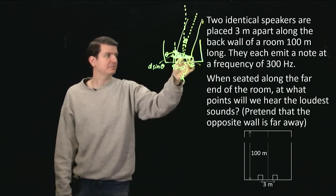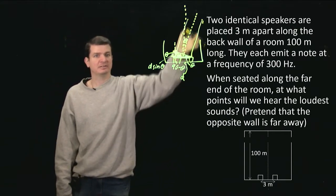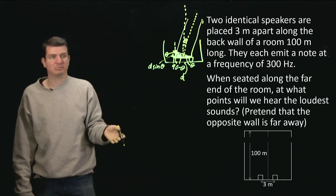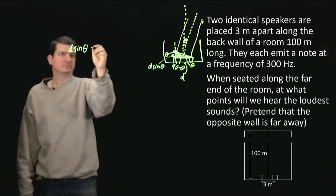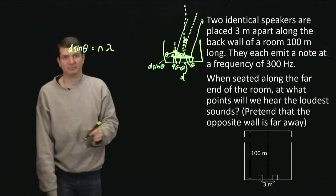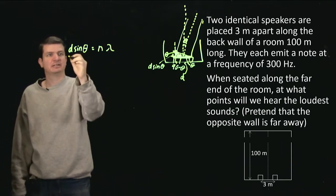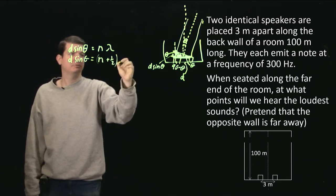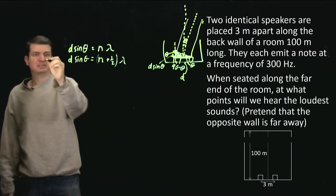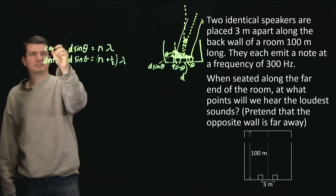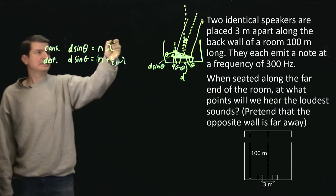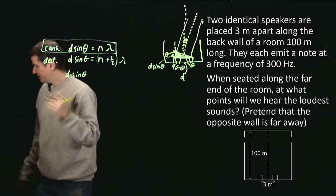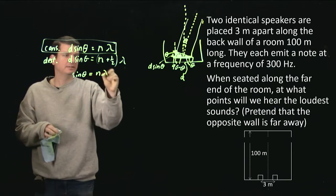We want the waves to end up in phase, so if a peak comes out here, we want it to be a peak there, so that as they move they stay together. In order for this path difference to keep a peak being a peak, that distance must be some integer multiple of the wavelength. If we wanted destructive interference — where definitely not to sit — we'd want to shift a peak into a trough, which means a shift of one-half of a wavelength. So we can write: d·sin θ = (n + ½)λ for destructive, and d·sin θ = nλ for constructive interference. This is the case we're interested in.